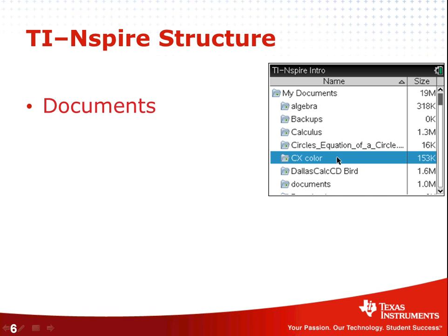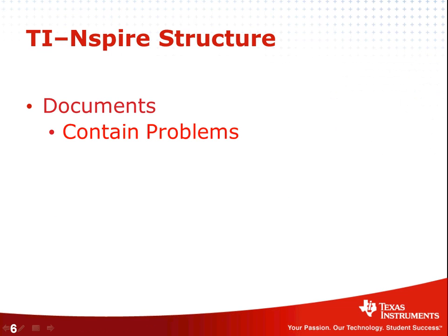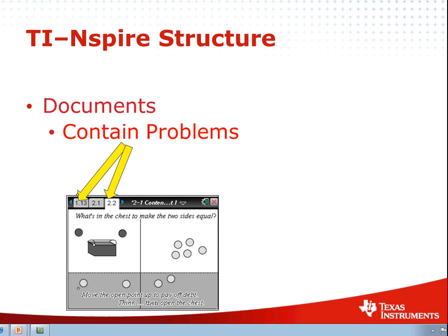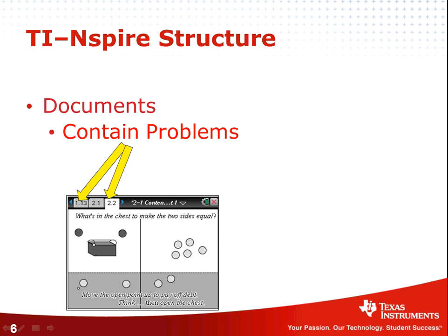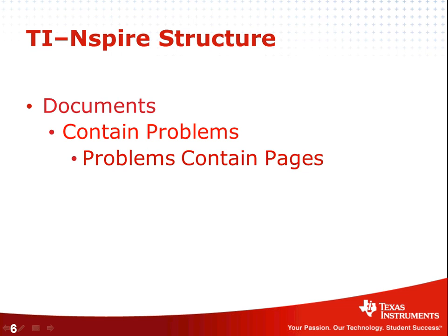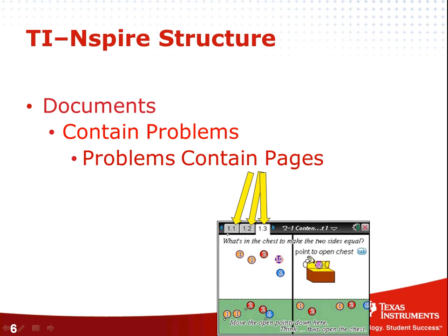Let me talk about the structure of the Nspire. If you were to go to the home page, you see choice number 2 that you could press to take you to My Documents. In your documents you may have a variety of options and you could open up a document. Those documents contain problems — problem 1 and problem 2 — and in those problems they can contain various pages. The first number tells you what problem you're on. The reason to have more than one problem is because if you want to have variables defined in one problem, they would not be defined in a new problem.